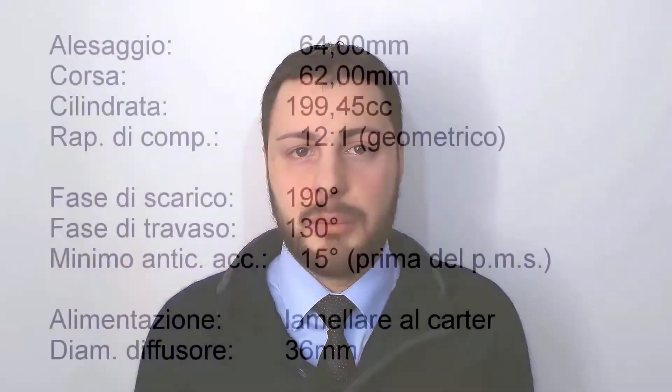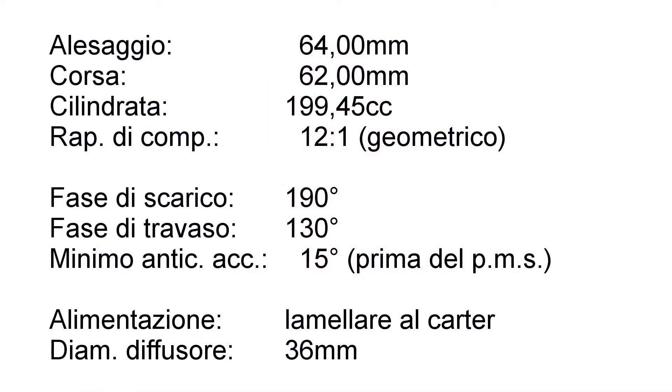What I'm proposing today is a theoretical study because I won't take into account the speed variations in noise propagation relating to temperature. The study subject is a fictional 200cc propeller with the piston's diameter at 64 and stroke 62. Let's take a closer look at all the necessary parameters for the calculation of the muffler: bore 64mm, stroke 62 for a total of 199.45 cm³, geometrical compression ratio 12 to 1, exhaust phase 190, transfer phase 130, ignition minimal timing 15 degrees before the top dead point, supply via reed valve to the crankcase and 36mm carburetor.